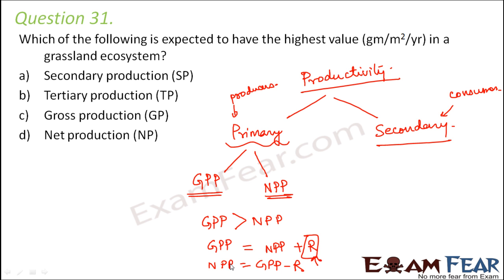As the value of R increases, net primary productivity decreases. For example, if respiration loss is 20% for autotrophs, it becomes 30% for herbivores and 60% for carnivores. So as the trophic level increases, the value of R also increases and therefore net primary productivity decreases. This was a quick recap of primary and secondary productivity.